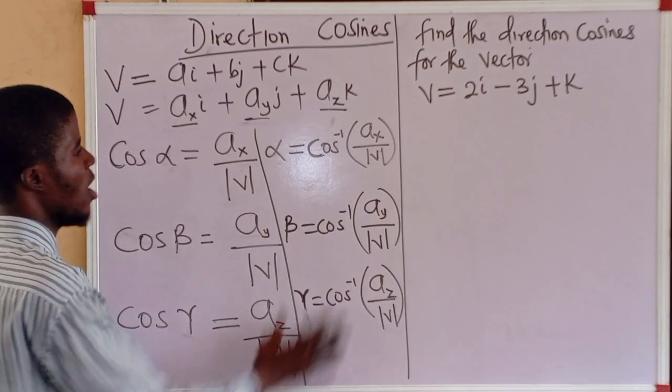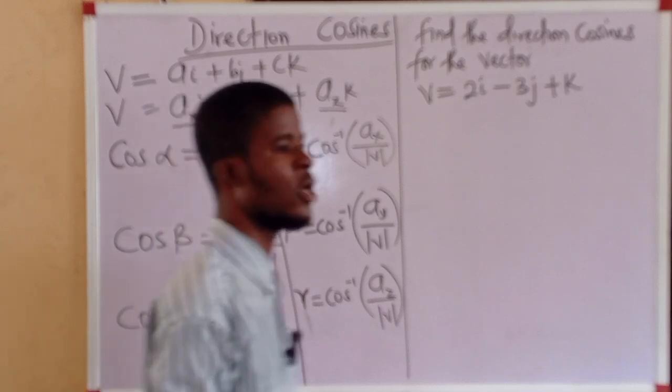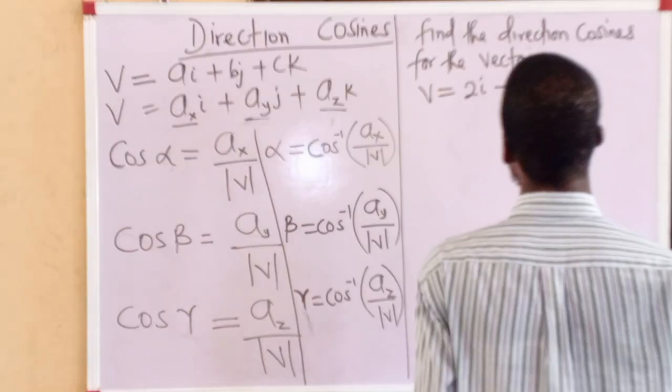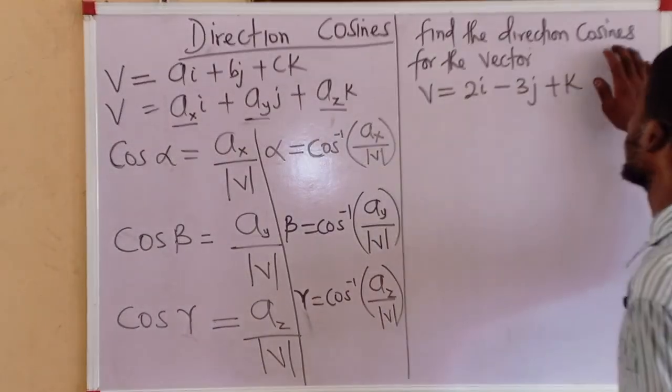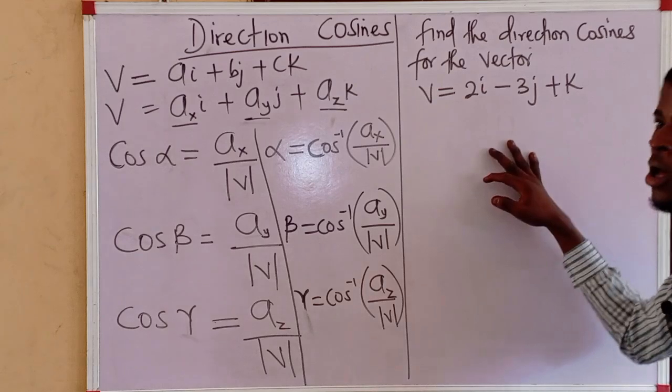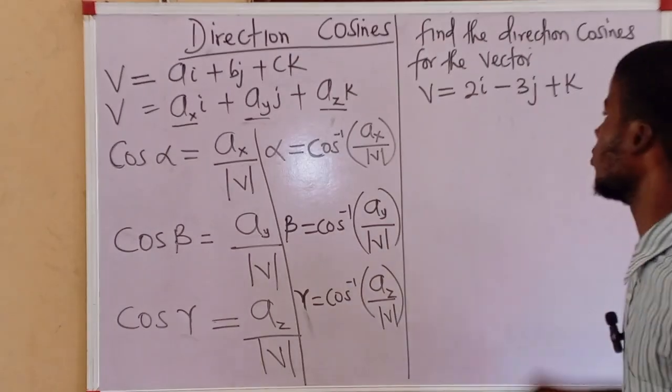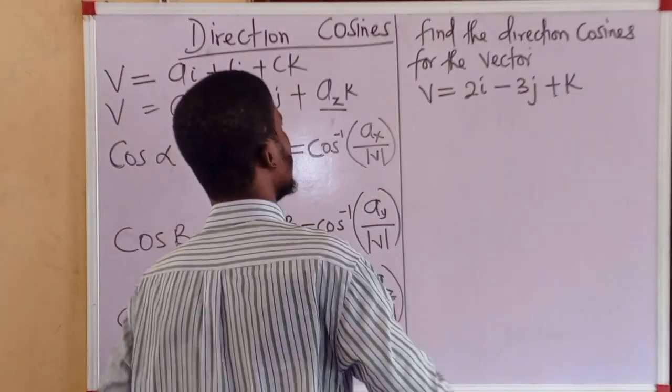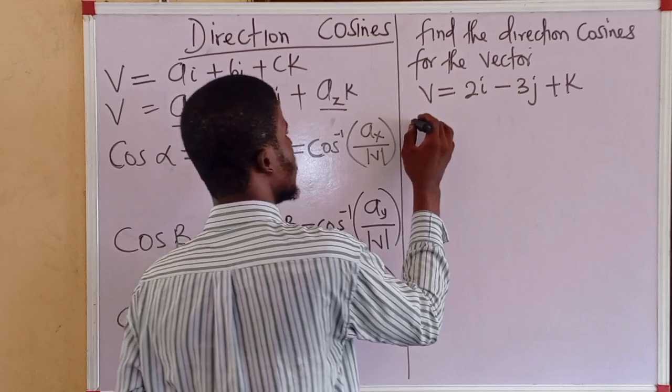On this note, let's find the direction cosines for the vector and from there, we can determine the direction angles. So, let's take the modulus of the vector.